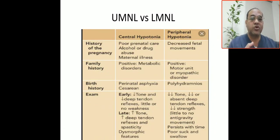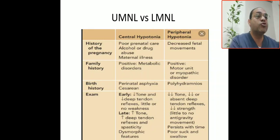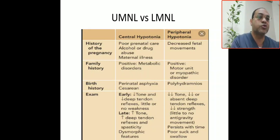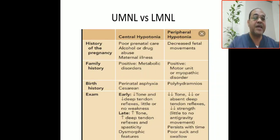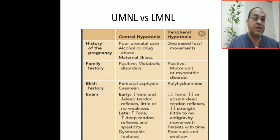Taking a systematic history: for central hypotonia, look for poor prenatal care, alcohol or substance abuse, or maternal illness. For peripheral hypotonia, decreased fetal movement with polyhydramnios points to lower motor neuron involvement — as in our case. Positive family history and metabolic disorders should be evaluated; we checked CK, ammonia, and lactate — all normal, excluding upper motor neuron metabolic causes.